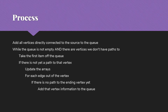This is our basic process for shortest path finding using breadth-first search. We're going to start by adding all vertices that are directly connected to the source to our queue. Then as long as the queue is not empty and we still have vertices we don't have paths to, we take the first item off the queue. If we don't yet have a path to that vertex, we update our arrays — yes we have a path here now, this is the vertex we came from, this is the total cost of that path. Then for each edge out of the new vertex, if there's no path to the vertex on the other end yet, we add that vertex's information to the queue.